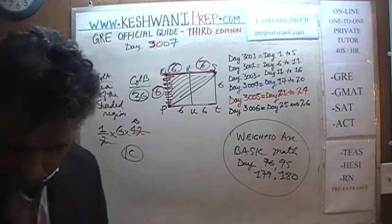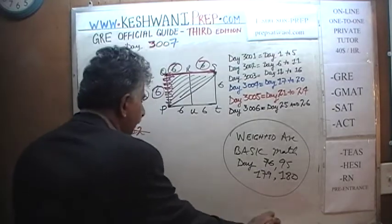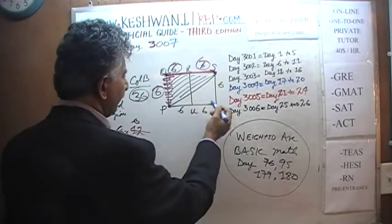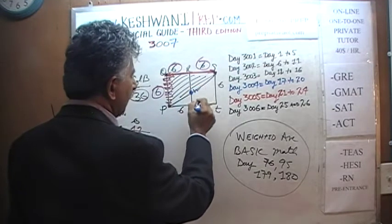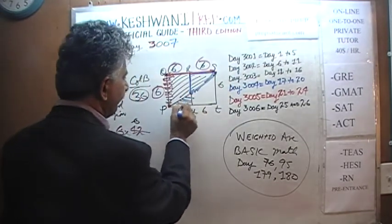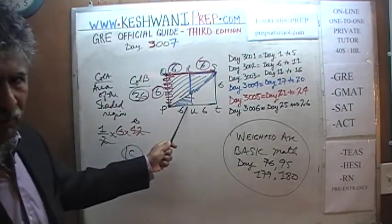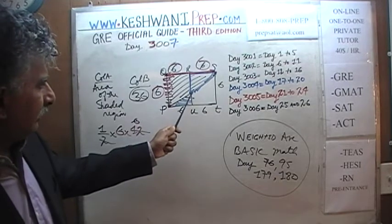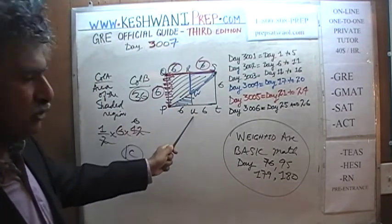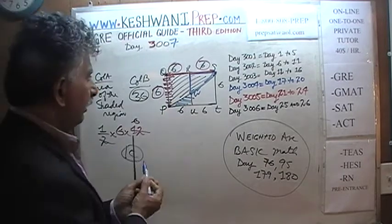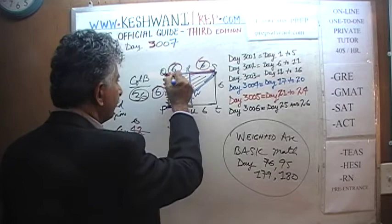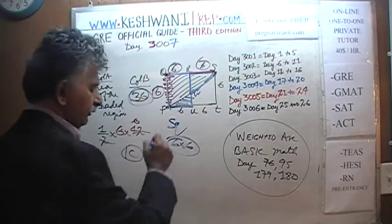The other way we could have done this problem is to pick up triangle WRS — it's the same triangle as PWU. If you pick up triangle WRS, flip it, you realize that the shape you're talking about is a square — a 6 times 6 square. Of course it's 36. The answer is C.